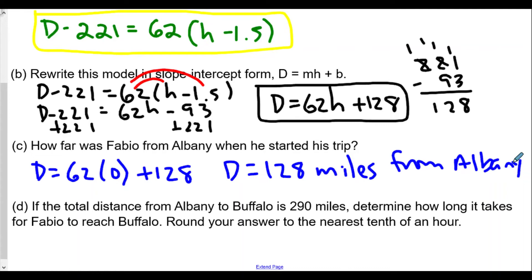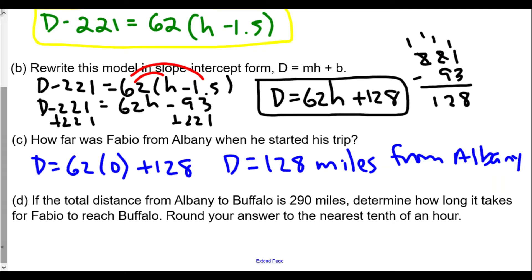Now for the last part, part D, if the total distance from Albany to Buffalo is 290 miles, determine how long it takes for Fabio to reach Buffalo. Round your answer to the nearest tenth of an hour.